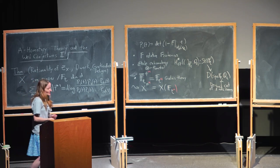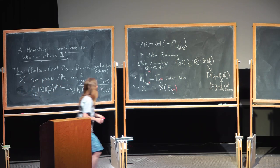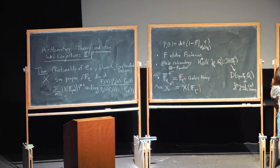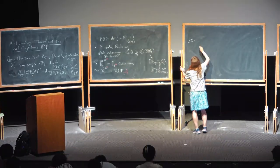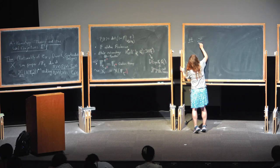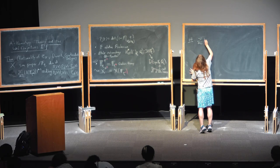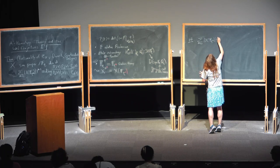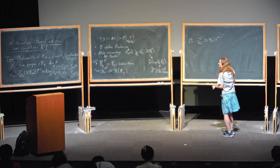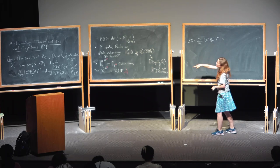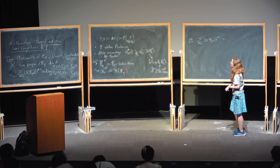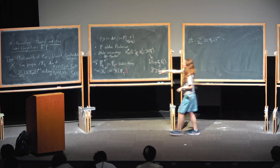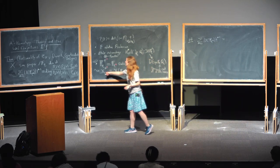Without further ado, let's prove the rationality statement given the Lefschetz fixed-point theorem, which is then formal as follows. We're interested in computing this generating function. We've decided that this set is the fixed points of Frobenius.